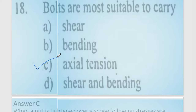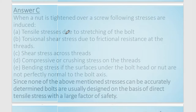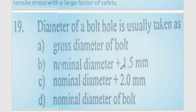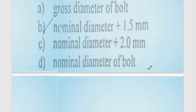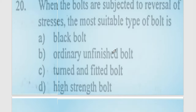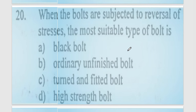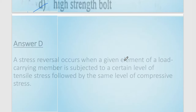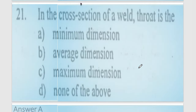Question 18: bolts are most suitable when provided in axial tension. Rivets cannot take tensile stress effectively. Question 19: the diameter of a bolt hole is usually taken as the nominal diameter plus 1.5 mm if the diameter is less than or equal to 25 mm. Option number B is correct. Question 20: when bolts are subjected to a reversal of stress, the most suitable type is high-strength bolts. Option number D is correct.